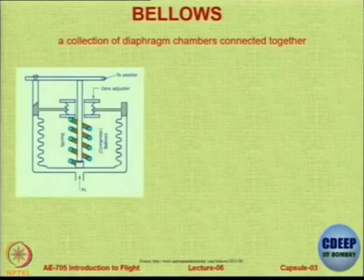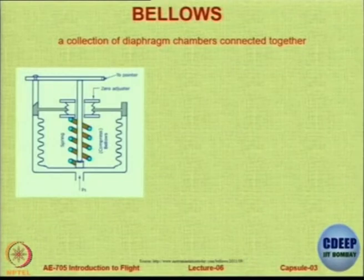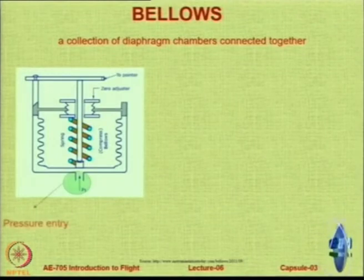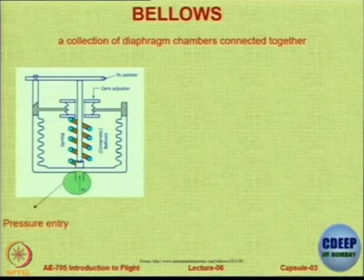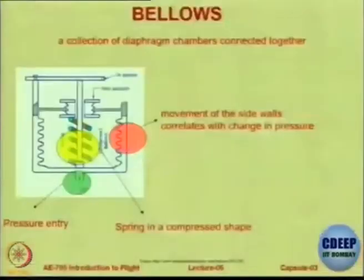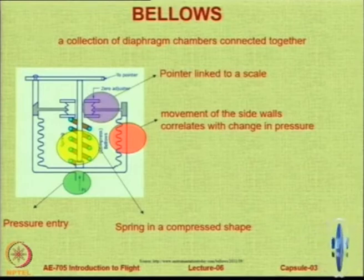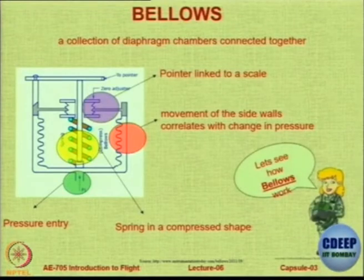Another instrument is the bellows gauge. Bellows are a collection of diaphragm chambers joined together, similar to a spring. The pressure enters from the bottom and forces against the spring, expanding it. The movement of the side walls — the bellows — is correlated with the change in pressure, and at the end you have a pointer linked to a scale. As the bellows move, you get a reading.